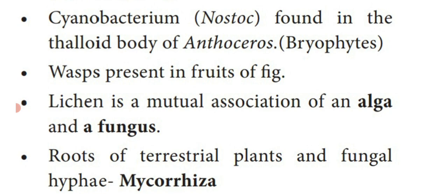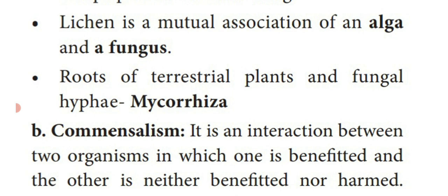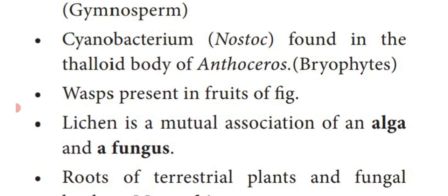Additional mutualism examples: small insects called wasps present inside the fruit of fig tree (Atiparam). Also, the mutual association between algal partner and fungal partner is known as lichen — another best example of mutualism. Mycorrhizae, also studied in 11th standard, is the association between the root of a terrestrial plant and a fungal partner. These are all the different examples of mutualism.